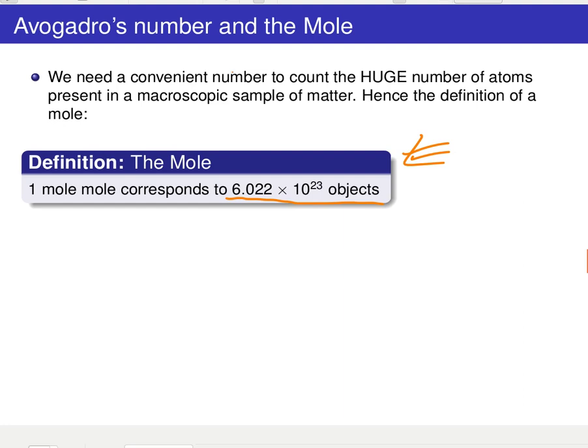So just like one dozen, right? If I say one dozen equals 12 objects, right? One mole equals 6.022 times 10 to the 23rd objects.